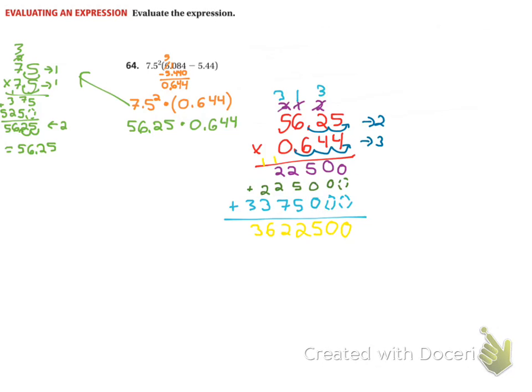But we're not quite done yet. We need to move our decimal in 5 places. So 1, 2, 3, 4, 5. So our final answer is going to be 36 and 225 hundredths.